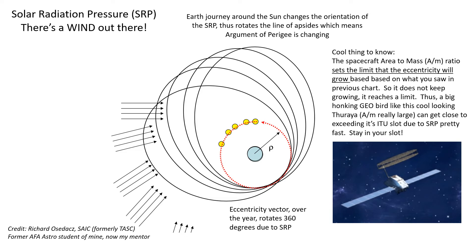The spacecraft area-to-mass ratio sets the limit that the eccentricity will grow — it's not boundless, it reaches a limit that is a function of the area-to-mass ratio. For big geobirds like the Thuraya, with large solar arrays and antennas sticking out, they have a big area-to-mass ratio, and it can be a problem. As you get out of round, you may rock back and forth in your ITU slot, which is 0.1 degree — about 70 kilometers — and you've got to do station keeping to control this or you'll get in trouble with the ITU.